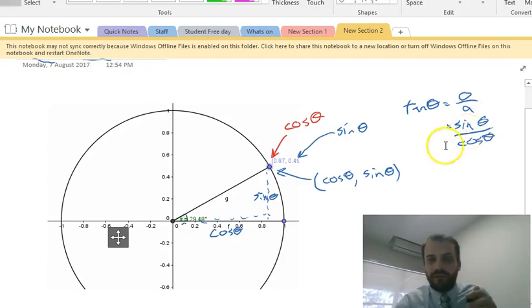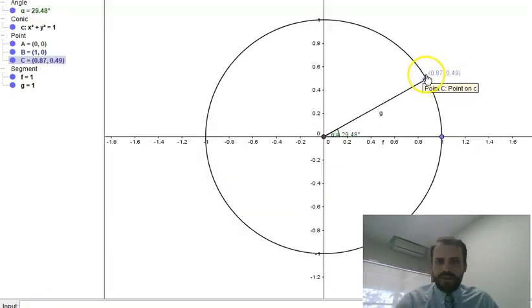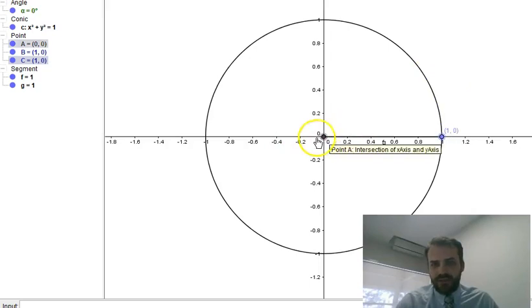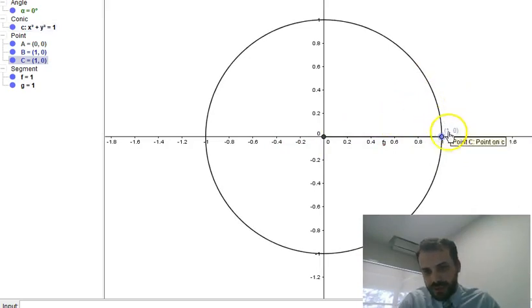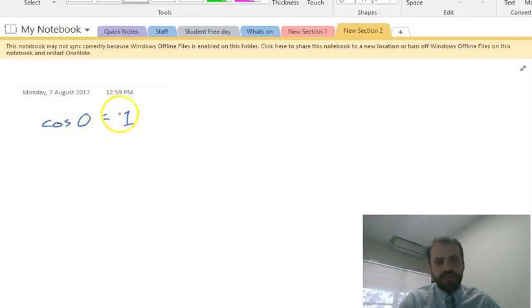Alright, now from this information, we should be able to find the cosine of our boundary angles and the sine of our boundary angles. So our first boundary angle is zero degrees. Cosine of zero degrees is equal to that number there, which is the number one. So I can write that down. Cosine zero equals one.